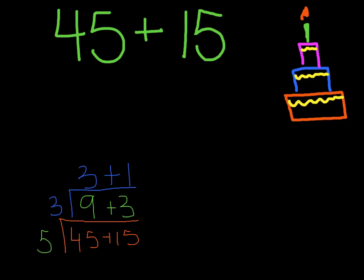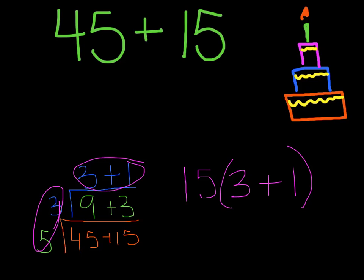So now what I want to do is I'm going to take these two numbers, the two numbers that I put into the original numbers, and I'm going to multiply them together. So 5 times 3 is 15. So I have 15, and then in the parentheses it's going to be 3 plus 1. And that came from this stuff.